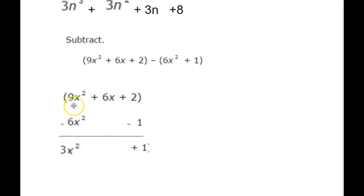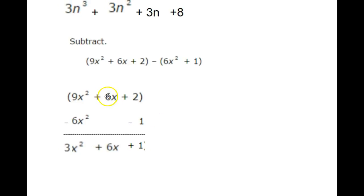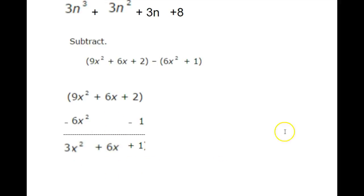Once everything is lined up, the subtraction is straightforward. 9x squared minus 6x squared is 3x squared, 2 minus 1 is 1, and I have 6x on top with nothing below it, so 6x plus 0 is 6x. So here is the result of the subtraction.